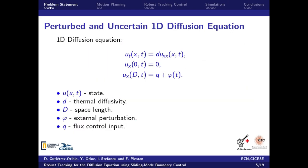The considered 1D diffusion equation is shown here, where the state is represented as u, and the parameter D represents the thermal diffusivity. t is the time, and x is the space variable, which can take values from 0 to capital D.